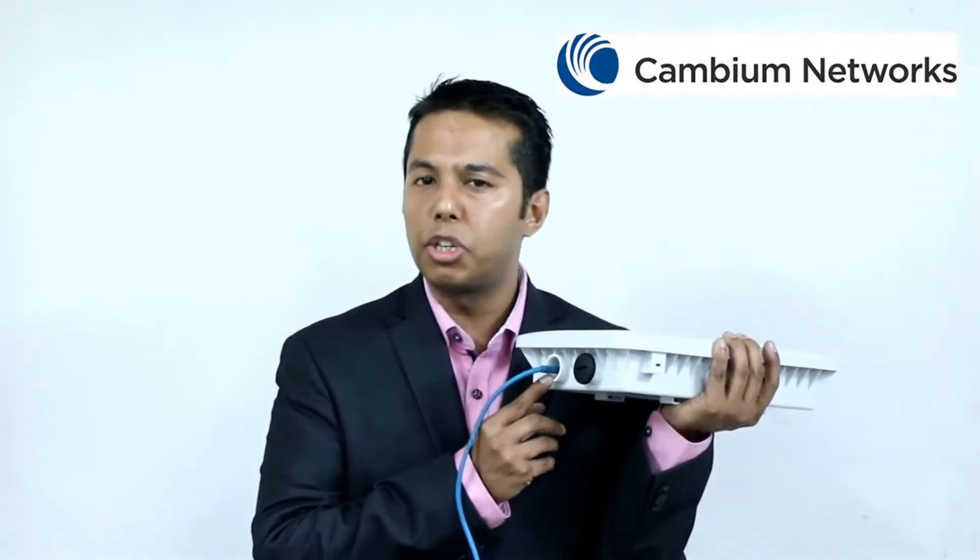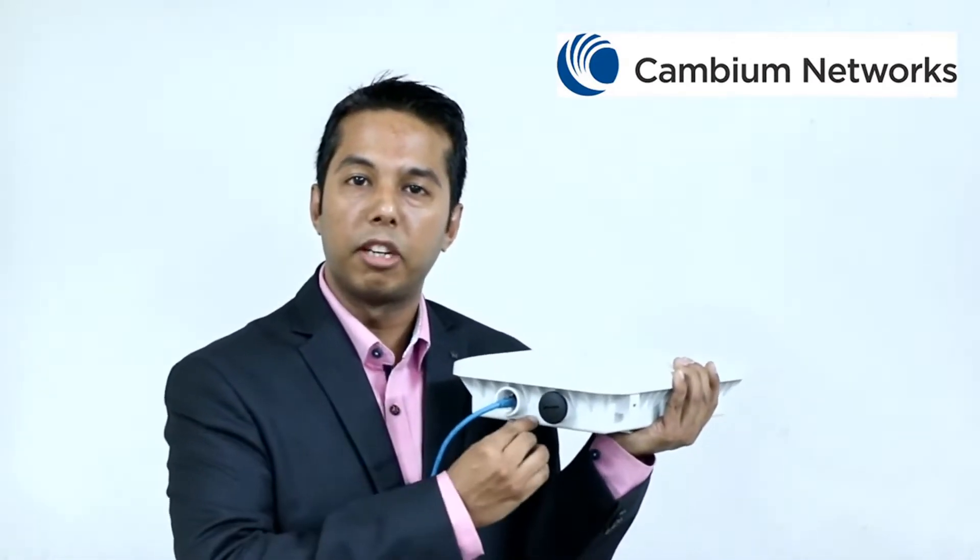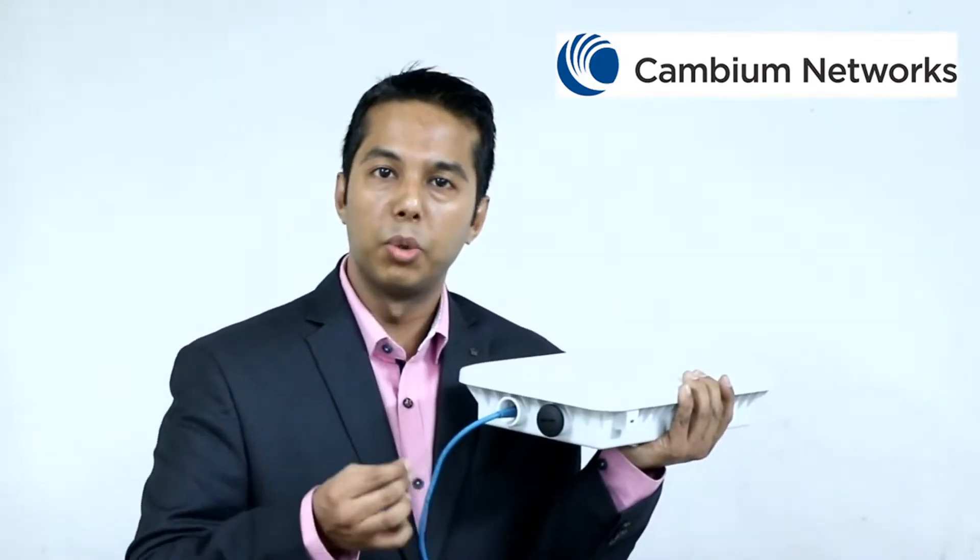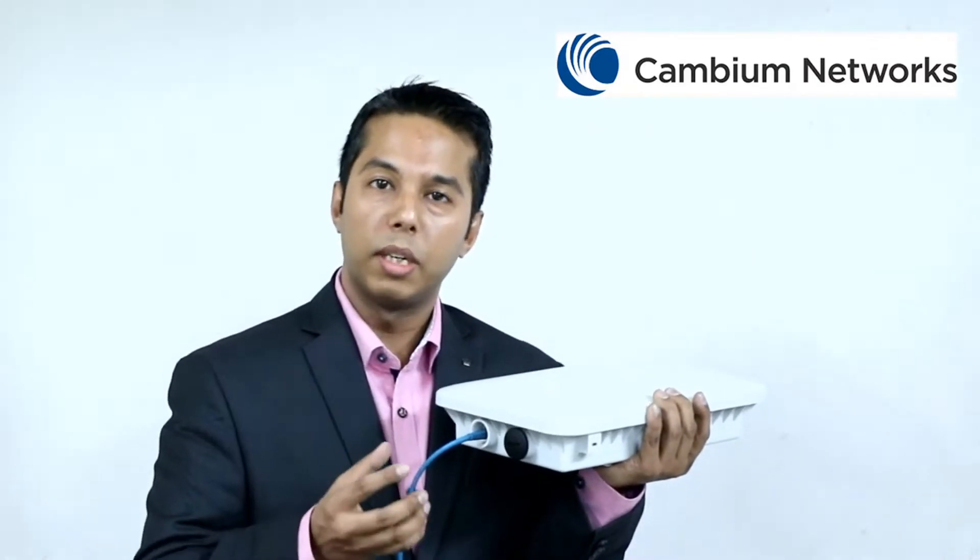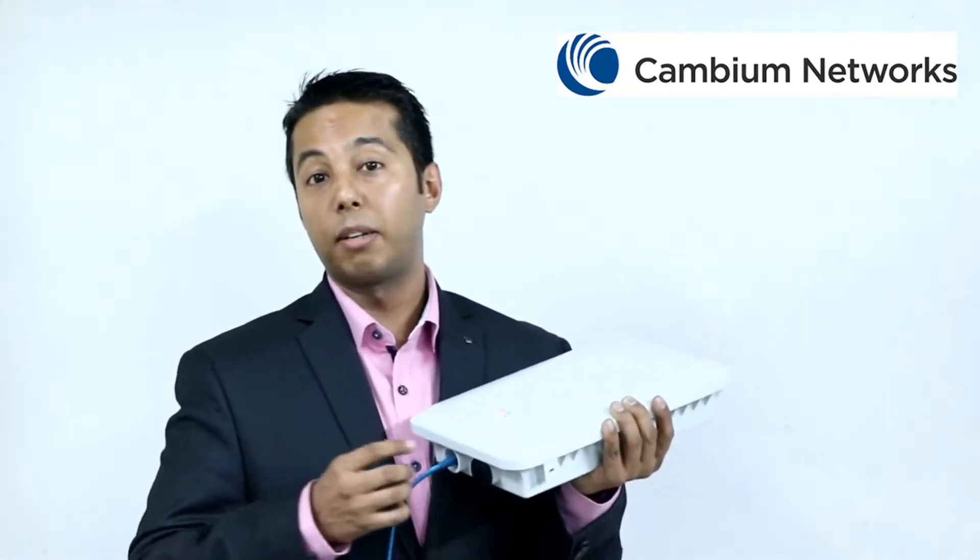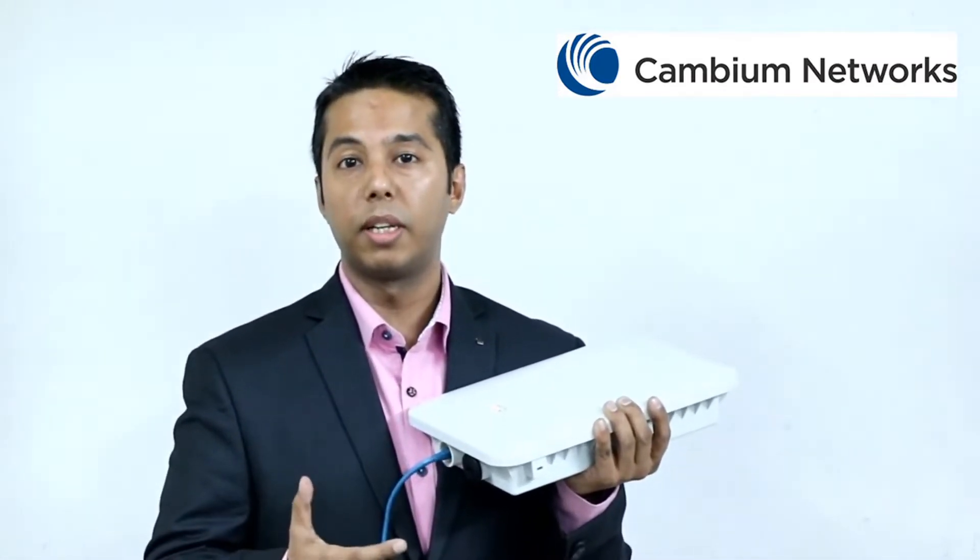There is also a reset button just below the Ethernet 1 port. This reset button has to be pressed for about 14 seconds in order to do the factory defaults. An important point to be noted, this reset button is supposed to be pressed very gently, as it might damage the button, which will result in replacement of the access point.